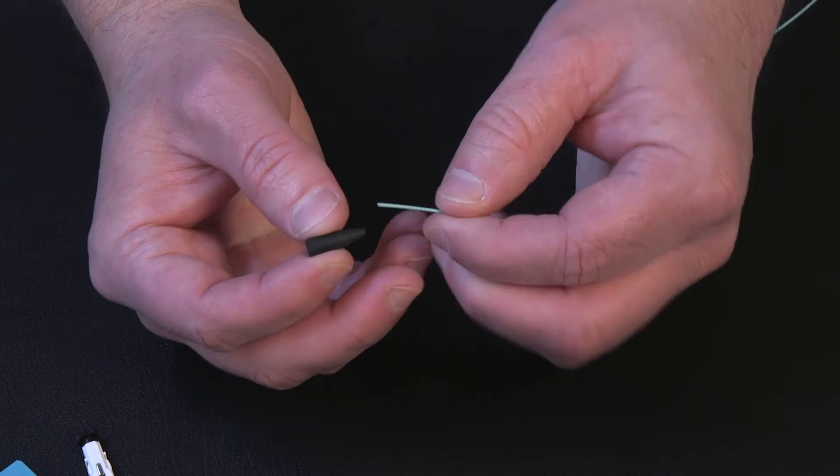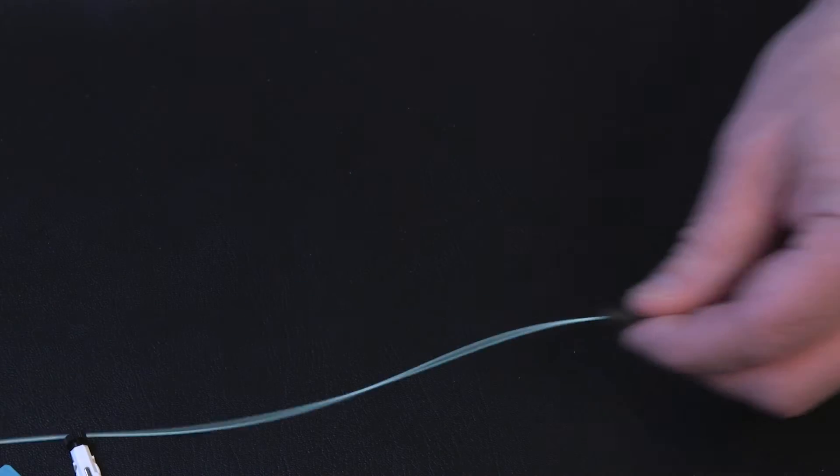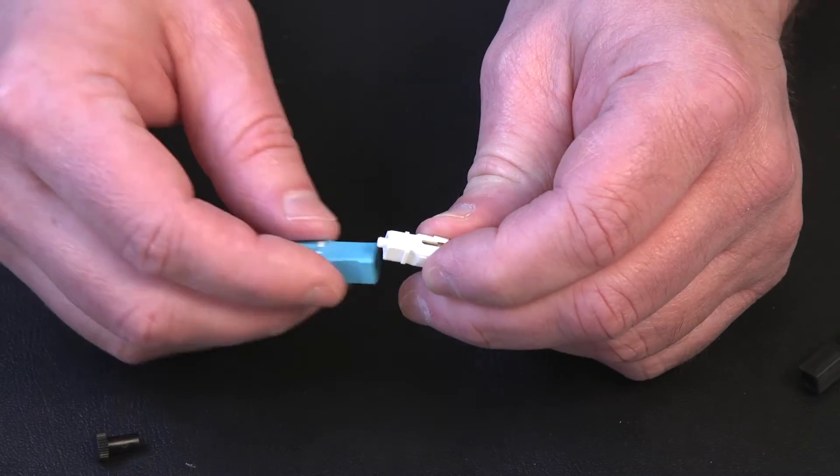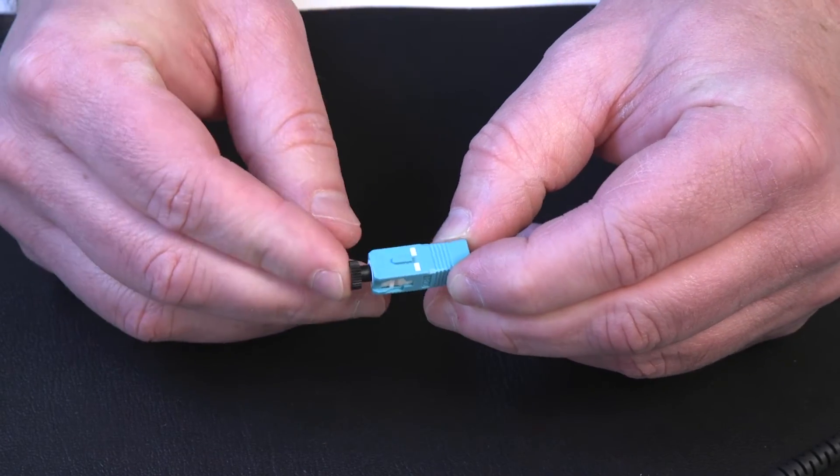Slide the boot over the fiber before you start the termination process. The cable should be inserted into the small end of the boot first. Remove the protective cap from the connector and put the collar on. Then place the cap back on the connector.